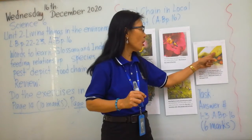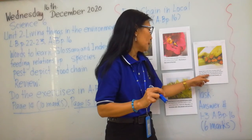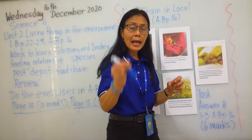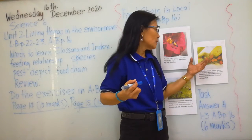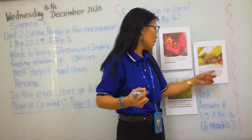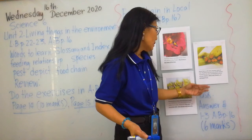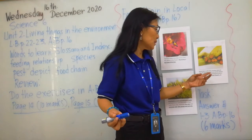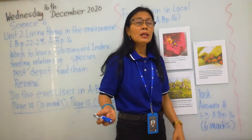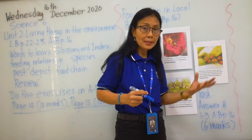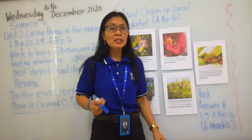Meaning if the stem is soft, they inject into it in order to get the sap out and sip on it. After the aphids take the nutrients from the plants, they will leave the plants with yellow-colored leaves. They damage flowers and fruit. That's why any plant that the aphids have fed on will be immediately damaged.